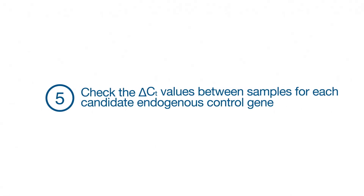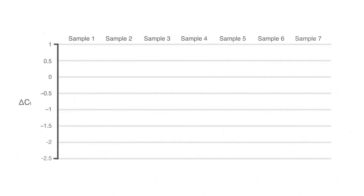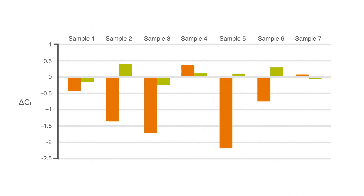Finally, compare the delta-CTs between samples for each candidate endogenous control gene. The best control will produce the delta-CT value closest to zero, which means there's no difference in expression across your samples.